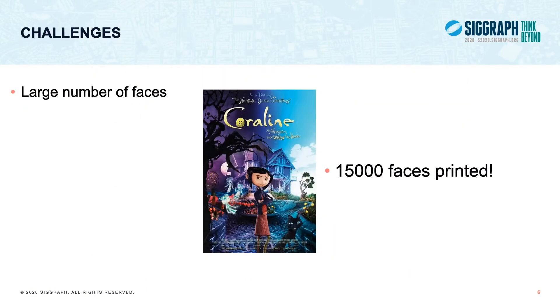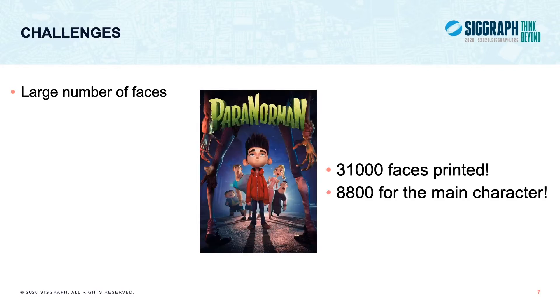However, this approach comes with numerous challenges. First, it requires a large number of faces to be printed. For example, for the movie Coraline made by the studio Leica, 15,000 faces needed to be printed for all characters. For their next movie, Paranorman, they printed 31,000 faces, and almost 9,000 faces were printed for the main character of Norman.